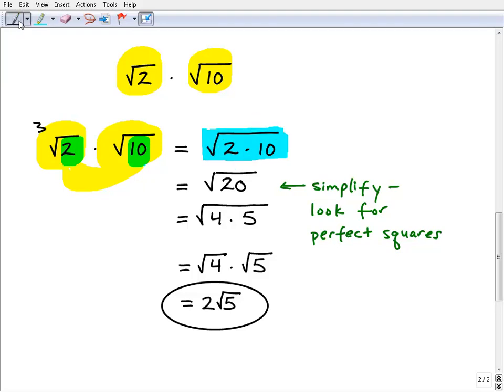Okay, so you see what's going on here. Now that holds true—let's just use our cube root example. So if I had the cube root of 2 times the cube root of 10, I can do the same thing. It would be the cube root of 2 times 10.